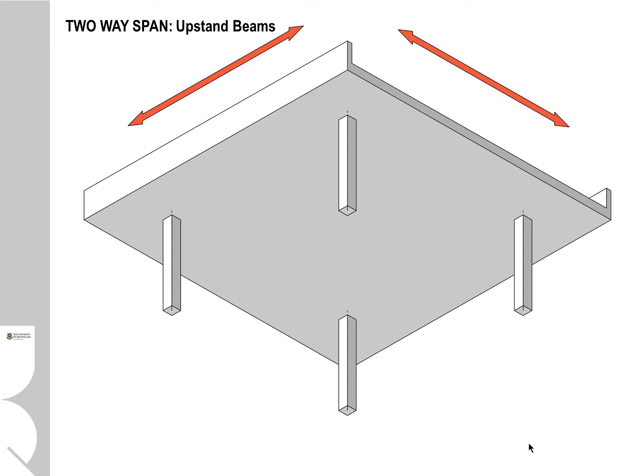We also have the capacity to form beams that go upwards as well. These can form part of the structure itself as well as providing fire separation between levels and becoming part of the facade articulation or design.